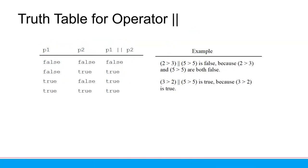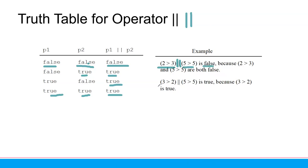Now we have another operator — we call it OR, represented by two pipe symbols (||). If one condition is true, the result is true. If both are false, the result is false. If both are true, the result is also true. For example, '2 > 3' is false OR '5 > 5' is false — the result is false. But '3 > 2' is true OR '5 > 5' is false — because one is true with OR, the result is true.